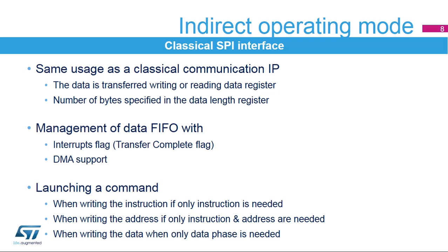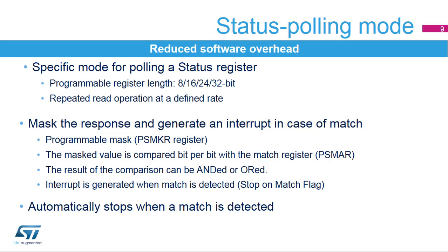Each command is launched by writing the instruction, address, or data, depending on the instruction context. A specific mode has been implemented in the Quad SPI interface to autonomously poll the status registers in the external flash memory. The Quad SPI interface can also be configured to periodically read a register in the external flash memory. The returned data can be masked to select the bits to be evaluated. The selected bits are compared with their required values stored in the match register.